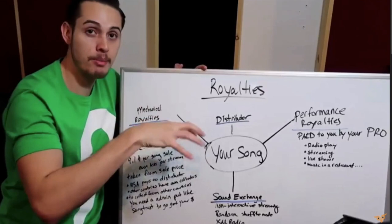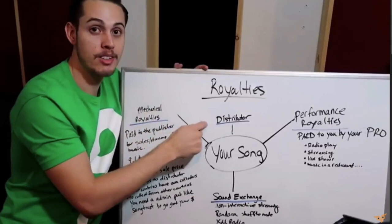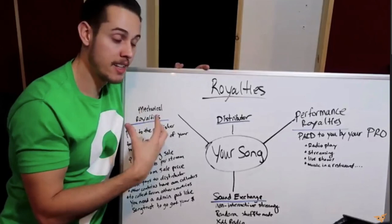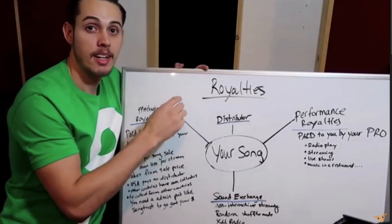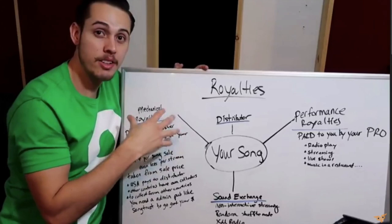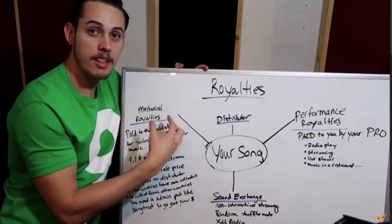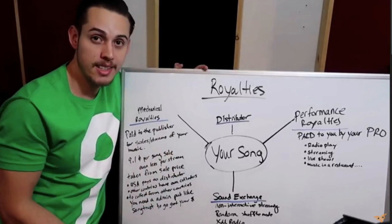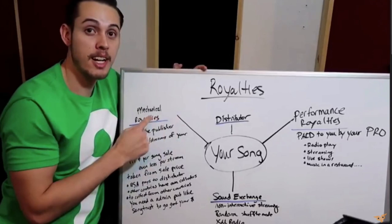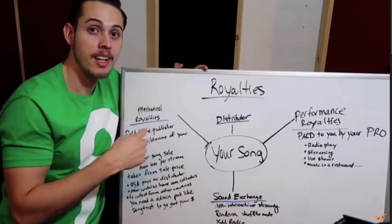That mechanical royalty is paid to that country's CMO, which is held specifically for the publisher to collect. Mechanical royalties are required by law to be taken from every sale and every stream of music and paid directly to the publisher. In the US, mechanical royalties are included in every stream and sale and paid to your distributor directly, so you're already collecting them. But if you're making sales in different countries, those mechanical royalties are collected by each individual country and held there for the publisher.